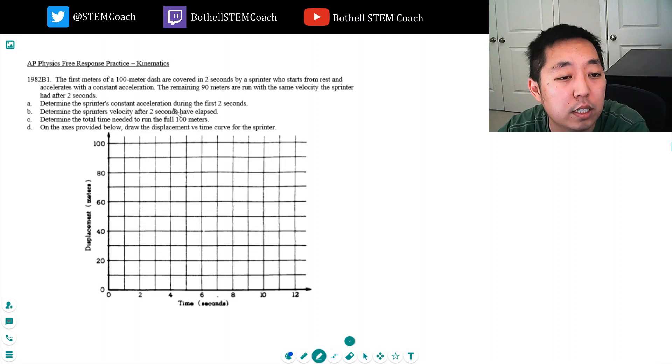Determine the sprinter's constant acceleration in the first two seconds. I think this is supposed to be first 10 meters, so the first 10 meters are two seconds. So he covers 10 meters in the first two seconds.